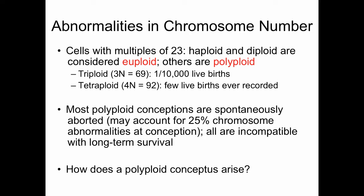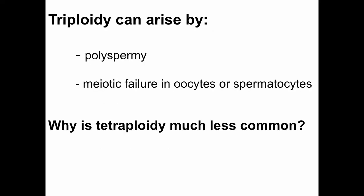Most polyploid conceptuses are spontaneously aborted, and indeed they may account for 25% of chromosomal abnormalities at conception. Polyploid conceptuses are all incompatible with long-term survival. So, how does a polyploid conceptus arise?